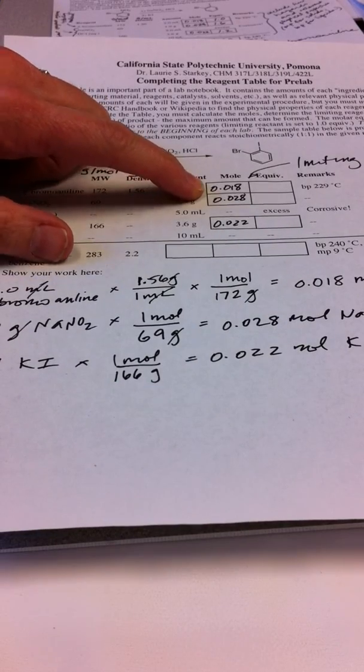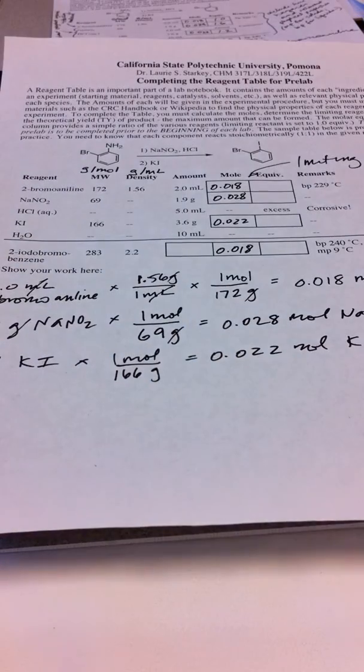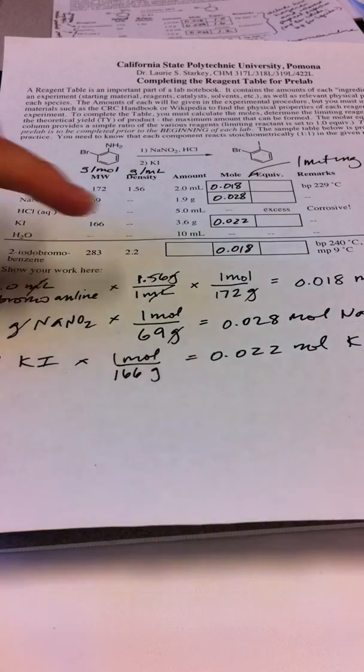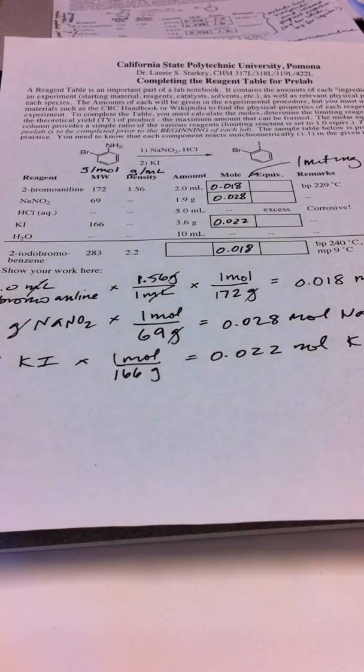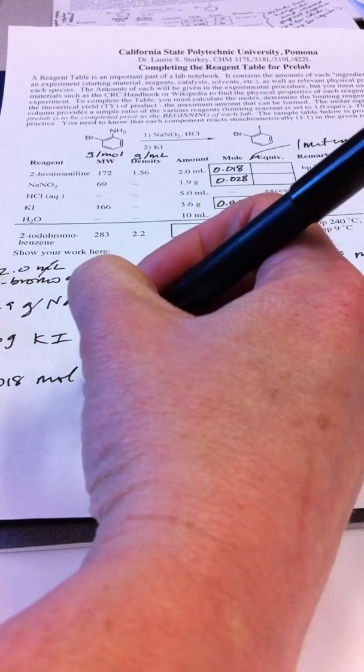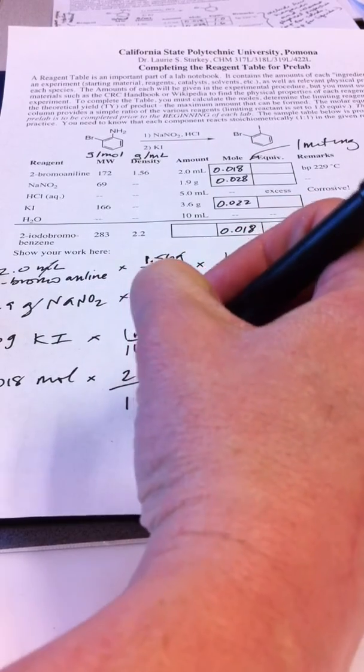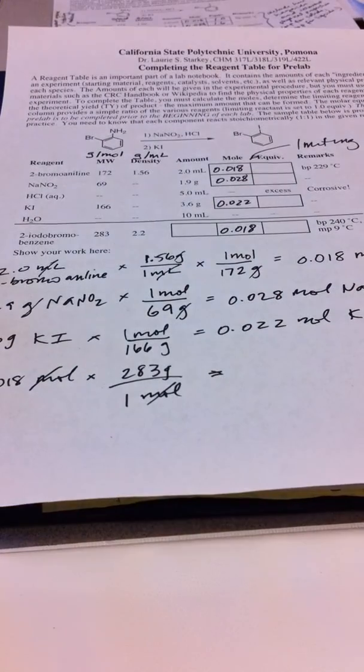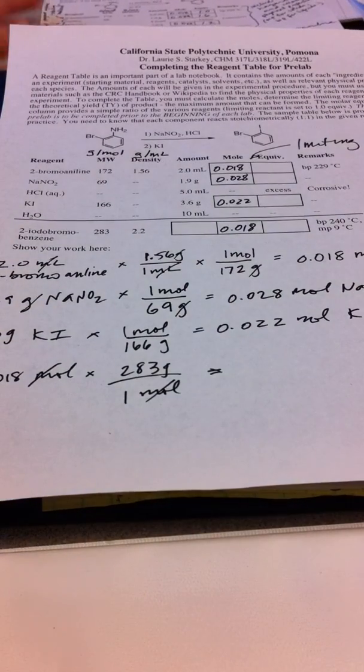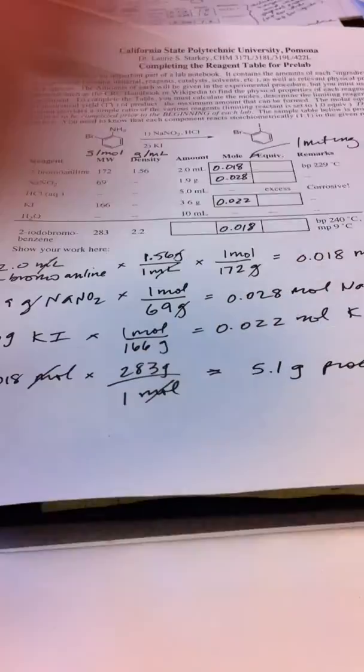We're going to take the number of moles of that limiting reactant and transfer it down here because that's how many moles of product I can make. The most I can make is 18 millimoles of product. Now I'm going to use that to calculate in grams how much product I can possibly make. So let's do that calculation. We have 0.018 moles and we know we have 283 grams for every one mole. I do that so that my moles cancel. Now I do that math and I come up with 5.1 grams of the product. I'll just label it product rather than the 2-iodobromobenzene. I'll put that up here.